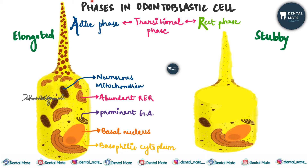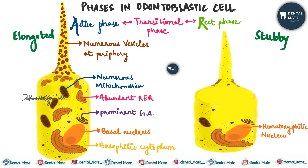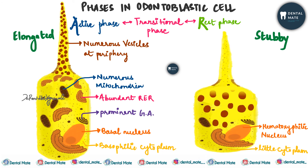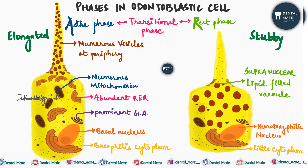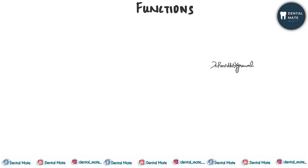When the cell converts from active phase to resting phase, the cell organelles undergo autophagocytosis. The stubby resting cell has a hematoxophilic nucleus, little cytoplasm, and the cytoplasm consists of lipid-filled vacuoles in the supranuclear region. The transitional phase shows cells at an intermediate stage — narrower with few organelles and autophagic vacuoles.